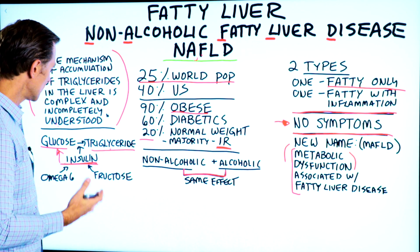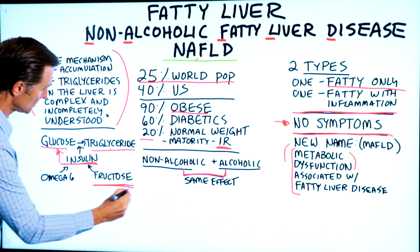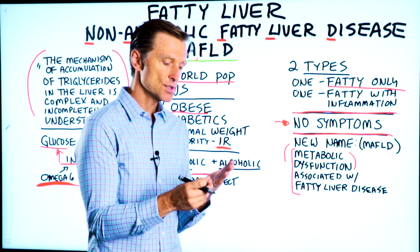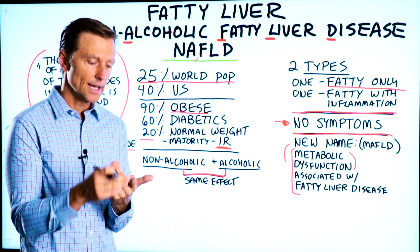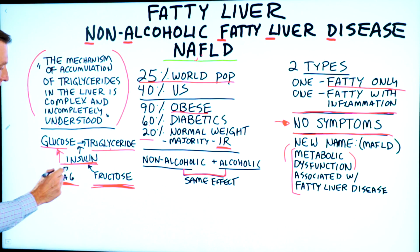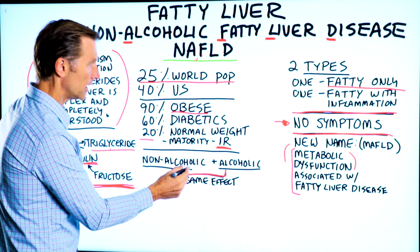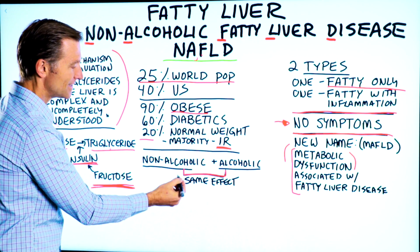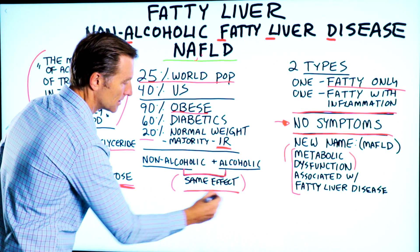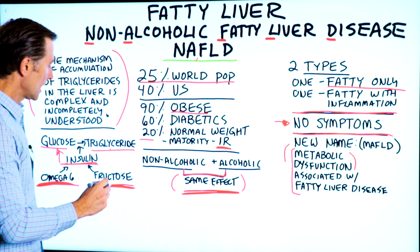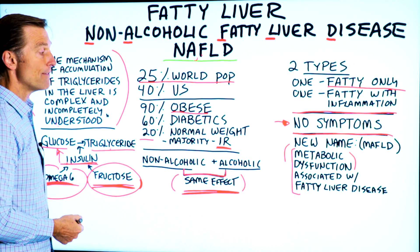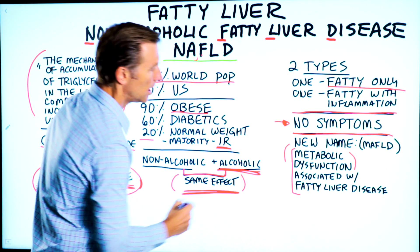What causes high levels of insulin is carbohydrates, especially fructose, and omega-6 fatty acids — I'm talking about the vegetable oils: soy oil, canola, corn oil, cottonseed oil. Those can lead to insulin resistance, raise insulin, and create this problem as well. If we compare non-alcoholic fatty liver disease and alcoholic fatty liver disease, they have two different causes but the same damage, the same effect. Fructose, omega-6 fatty acids, and other refined carbohydrates have a very similar effect to alcohol on the liver.